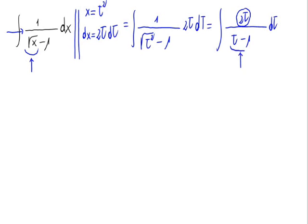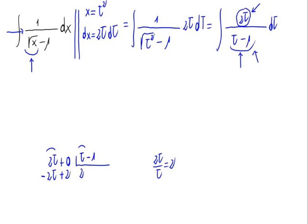Now to calculate this integral we have to divide the numerator by the denominator. Dividing 2t plus 0 by t minus 1: 2t divided by t is 2, and 2 times negative 1 is negative 2, so we have a remainder of 2.